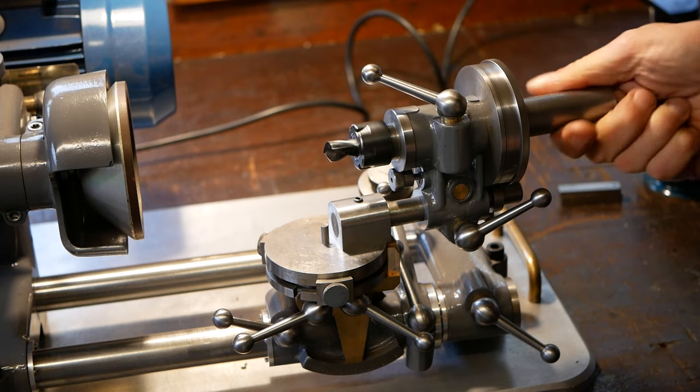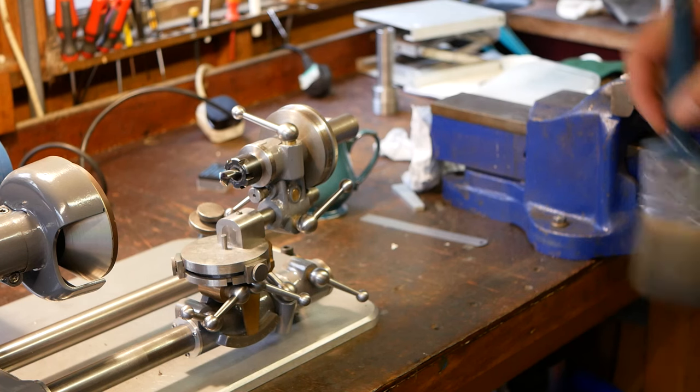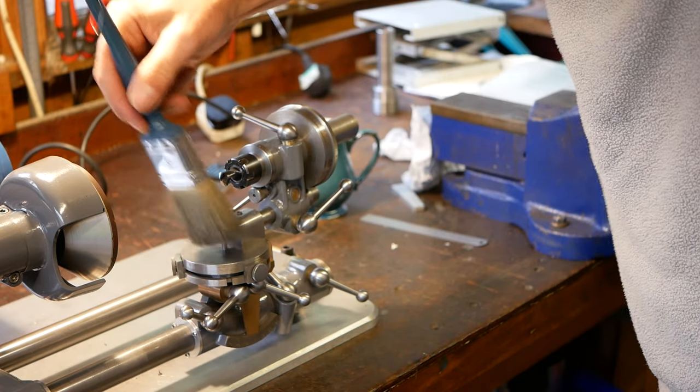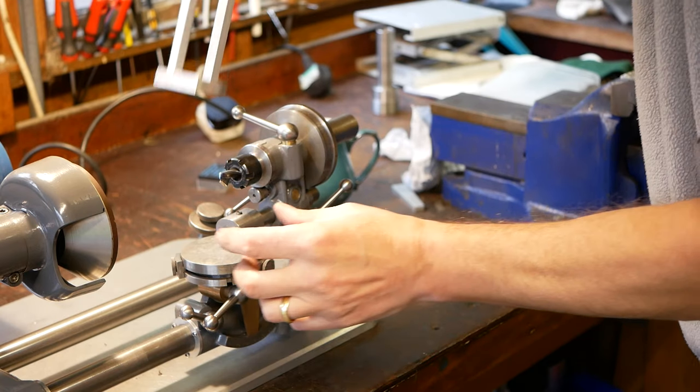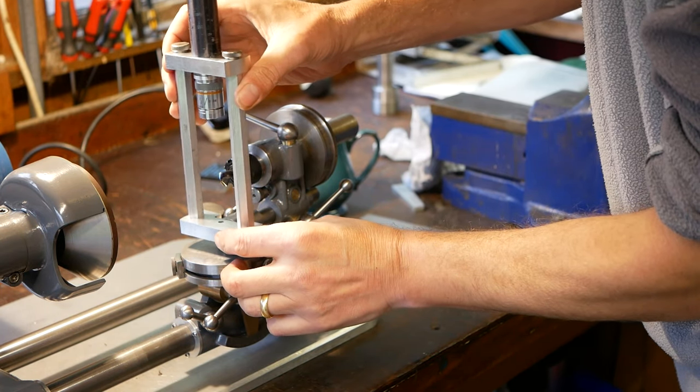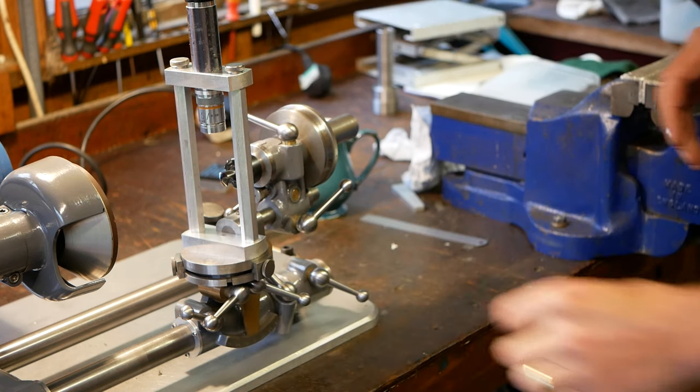The drill bit must be offset laterally. The offset distance is dependent on the size of the drill bit. Larger drill bits require a larger offset. Here Alistair proposes using a microscope with a calibrated graticule as a means of measuring that tip offset.